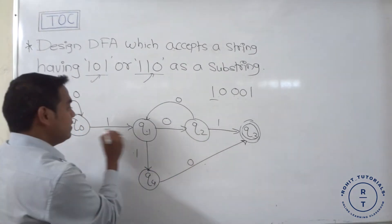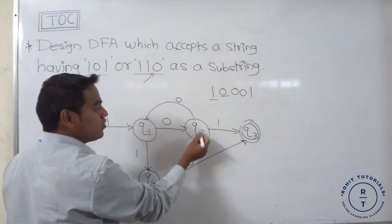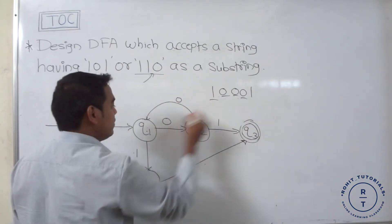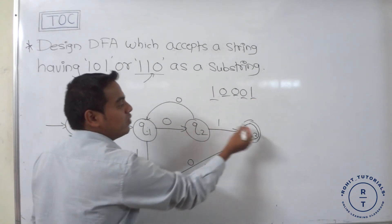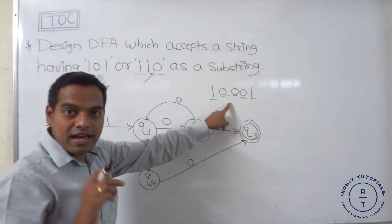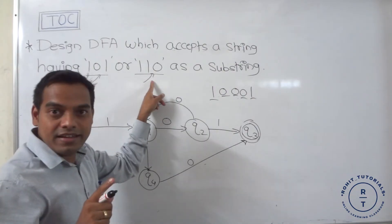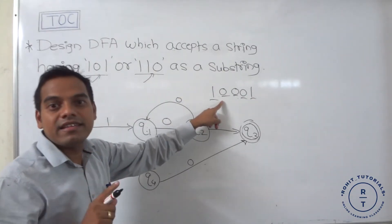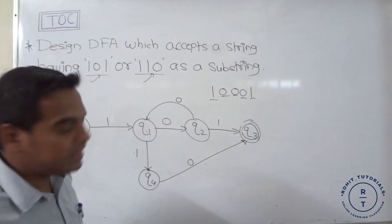However, consider a longer string where 0 at Q2 is incorrectly mapped back to Q1. A trace shows: 1 goes to Q1, 0 goes to Q2, 0 goes to Q1, 0 goes to Q2, 1 goes to Q3. This would incorrectly accept the string even though it doesn't contain 101 or 110 as a substring — so that transition is incorrect.